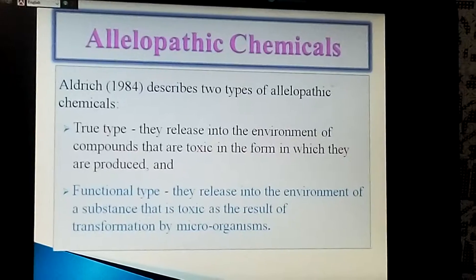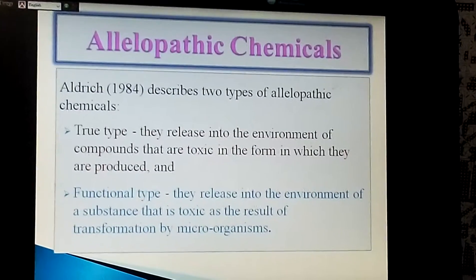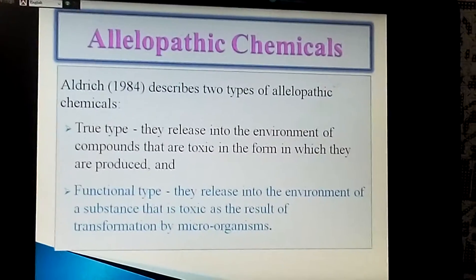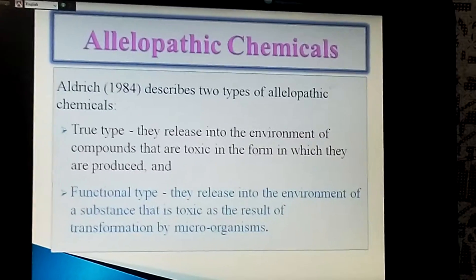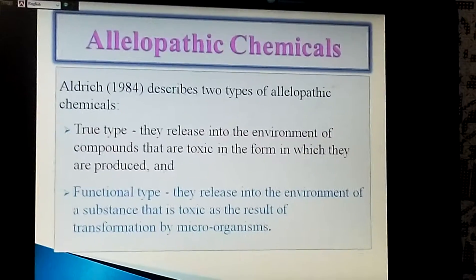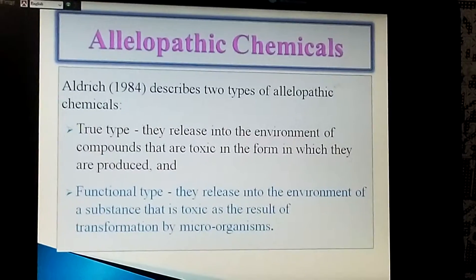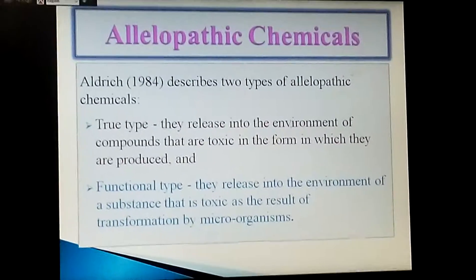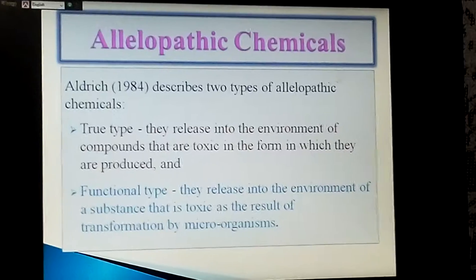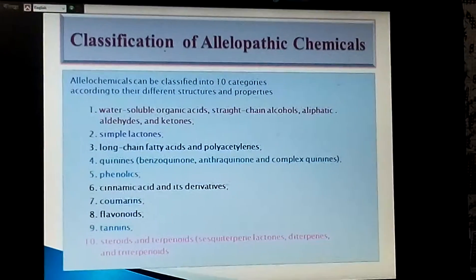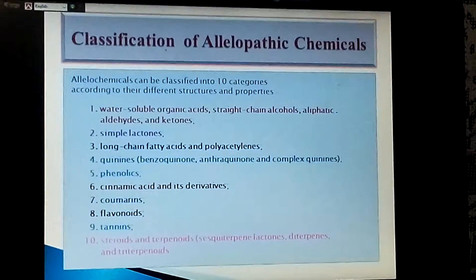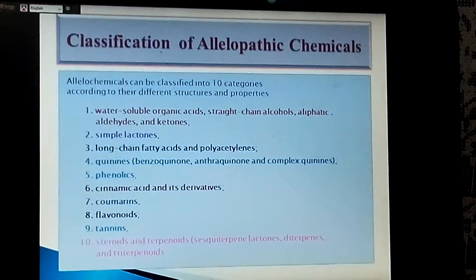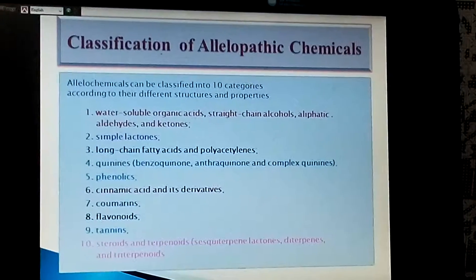Aldrich describes two types of allelopathic chemicals. True type: they release into the environment compounds that are toxic in the form in which they are produced. Functional type: they release into the environment a substance that is toxic as the result of transformation by microorganisms. Classification of allelopathic chemicals: allelochemicals can be classified into 10 categories according to their different structures and properties.